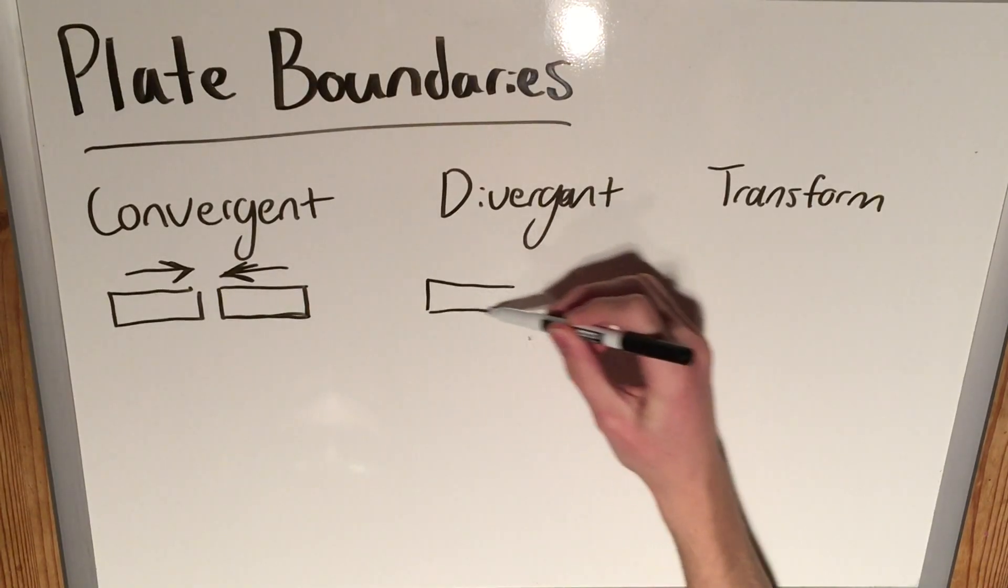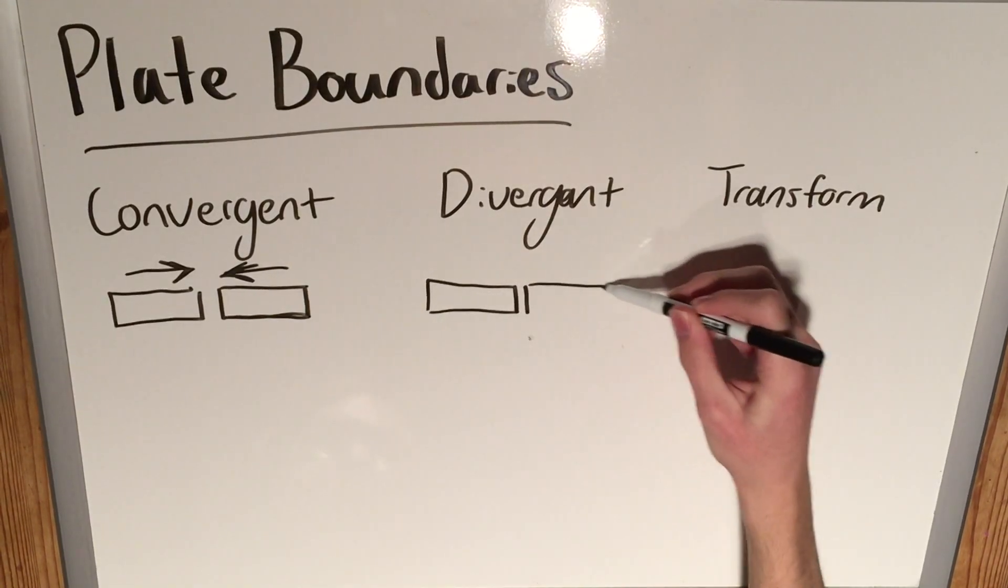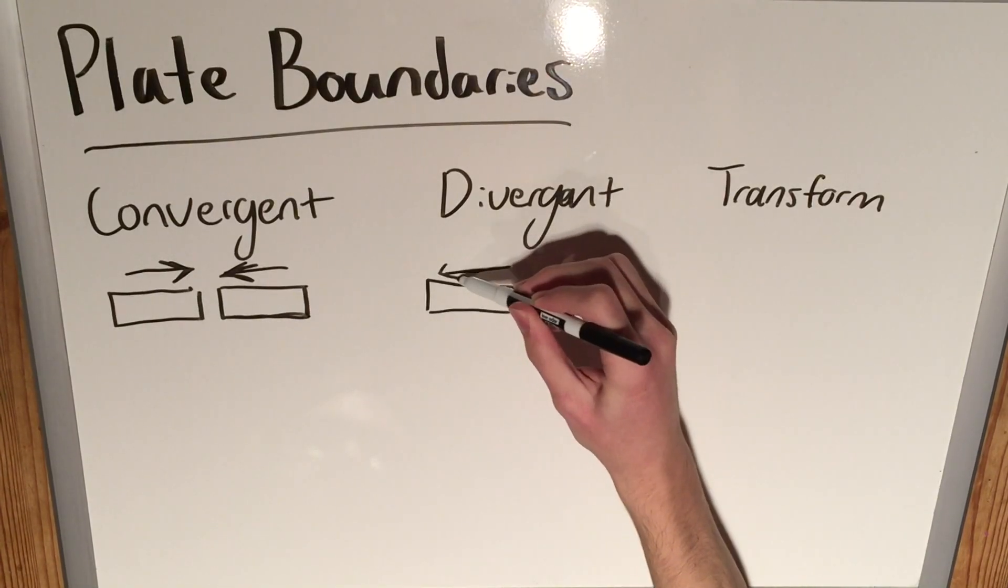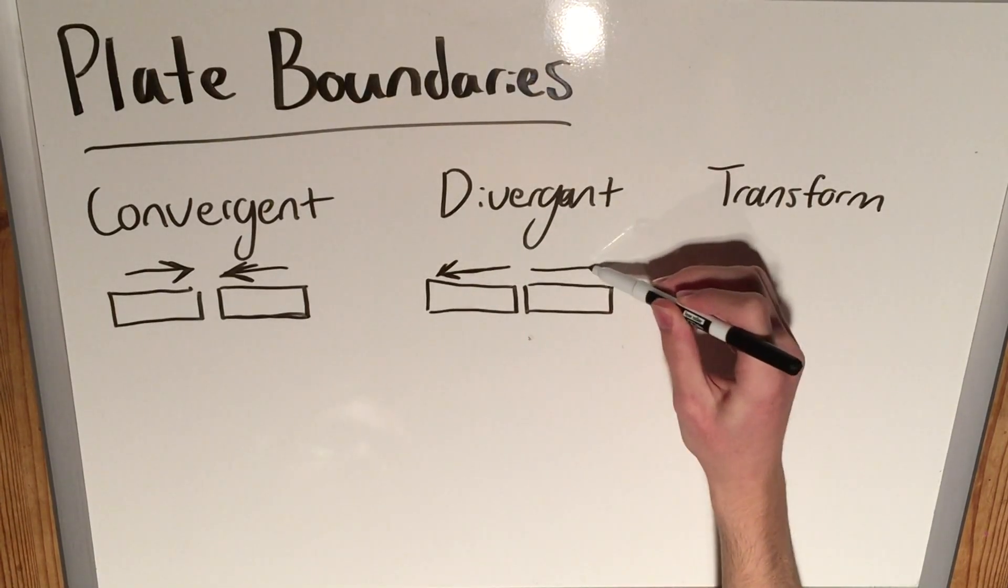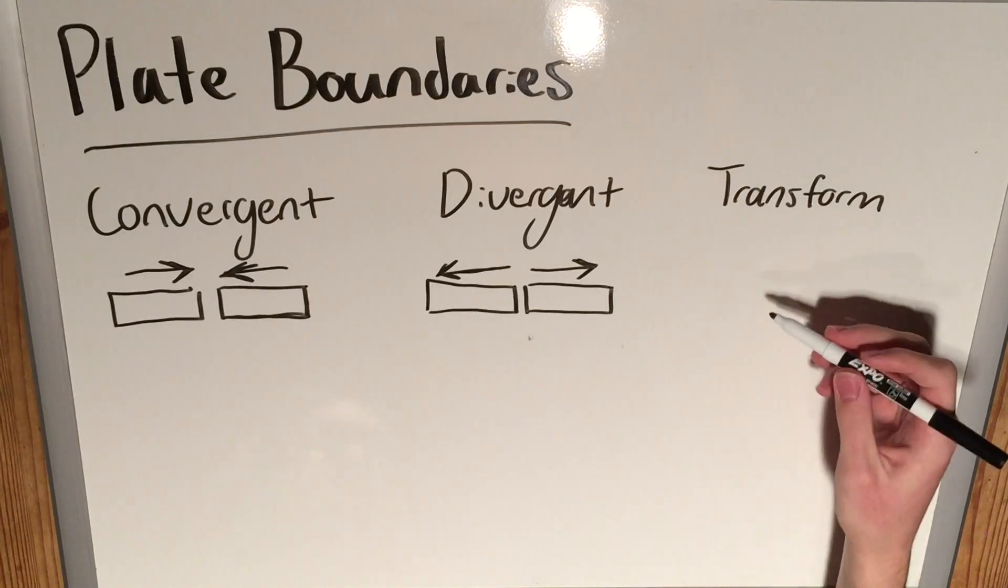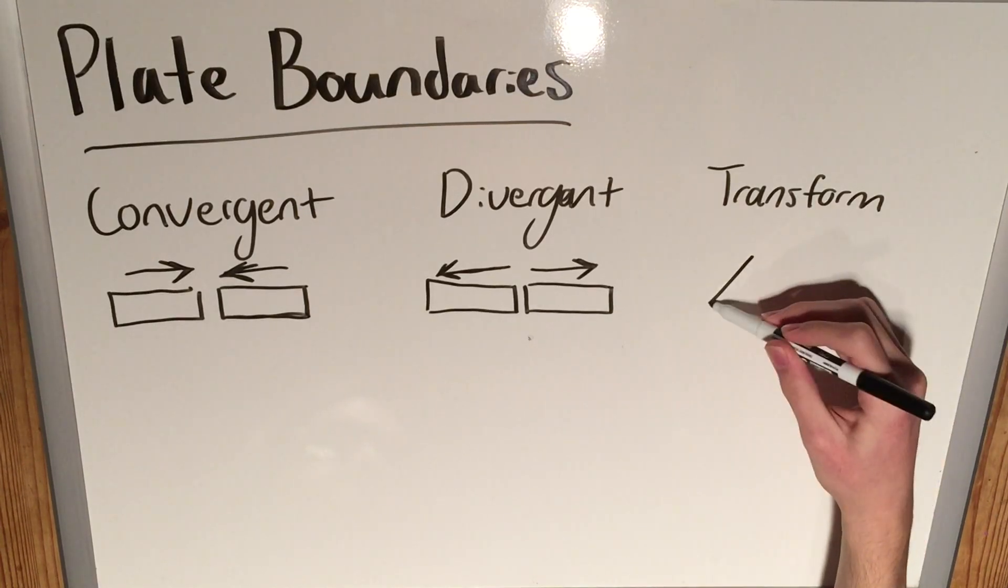Divergent, as the name would imply, is two plates moving away from each other, and you'll get this little opening in the middle.